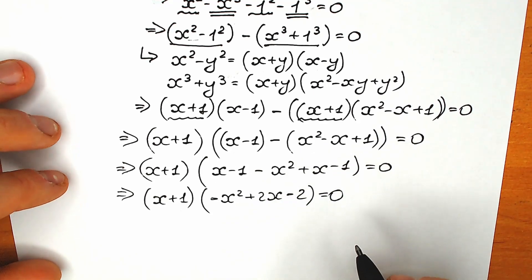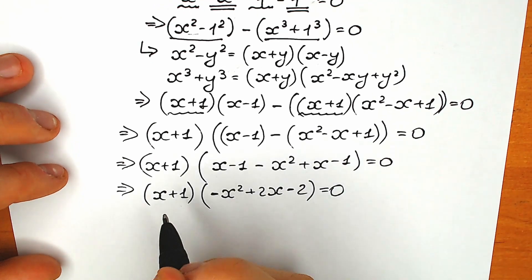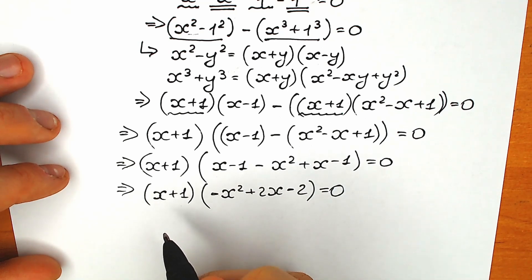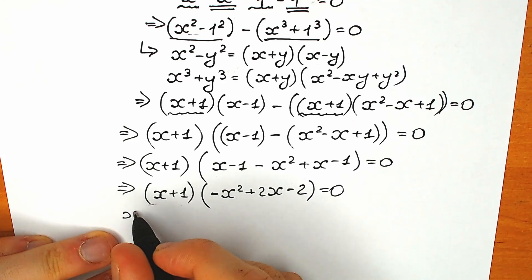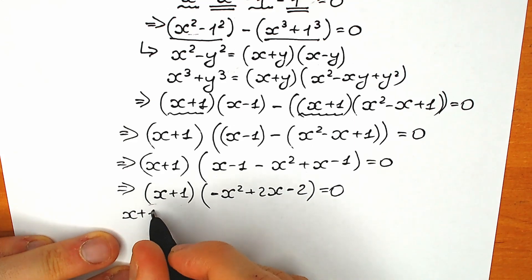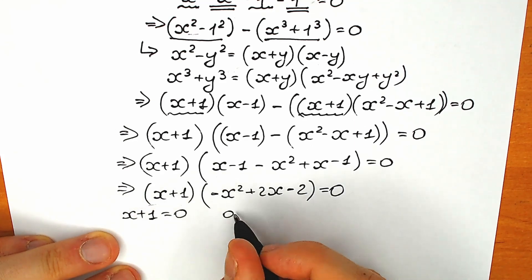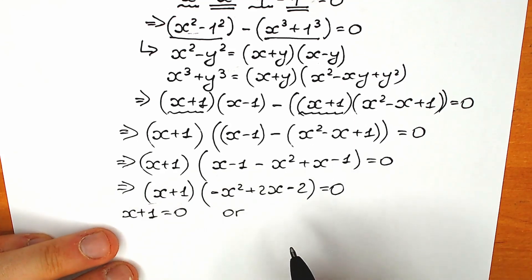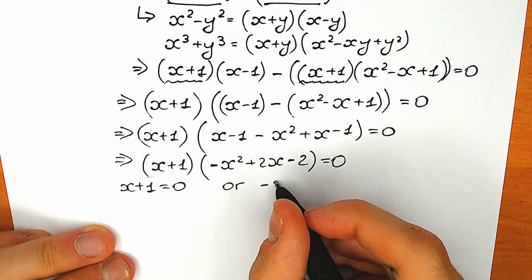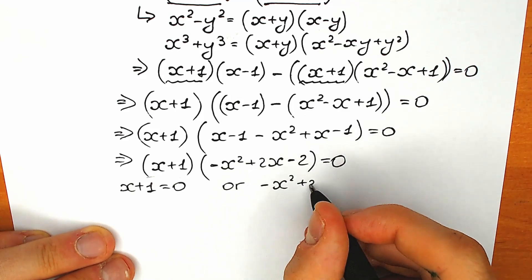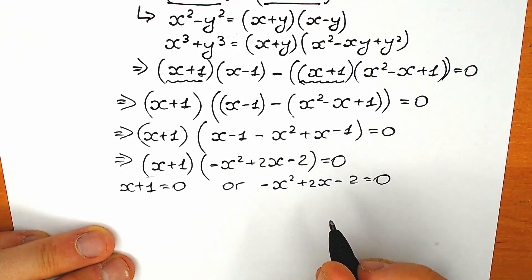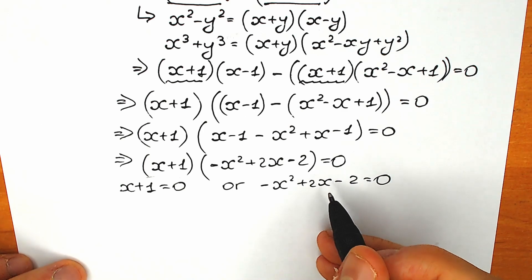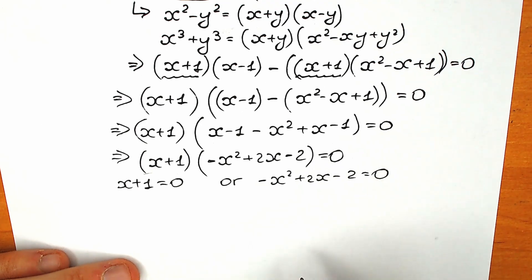We have a product of two parentheses equal to 0, so either the first parenthesis equals 0 — giving x plus 1 equals 0 — or the second parenthesis equals 0: minus x squared plus 2x minus 2 equals 0. Let's start by solving this quadratic equation.